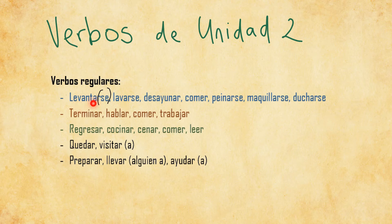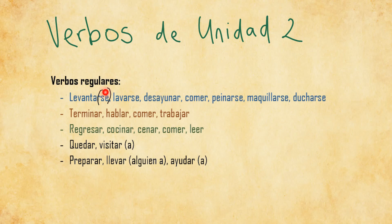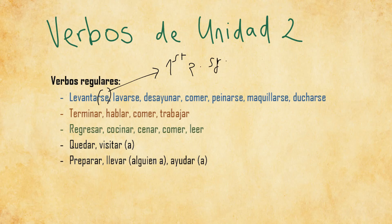If I want to say 'I get up' you would say LEVANTO, because the first person of LEVANTAR is LEVANTO. However, we cannot forget that this is also a reflexive verb and that we have to conjugate the reflexive part into the same person as the verb. So ME LEVANTO would be the correct form in the first person singular.